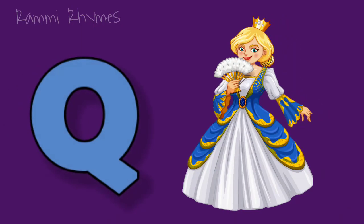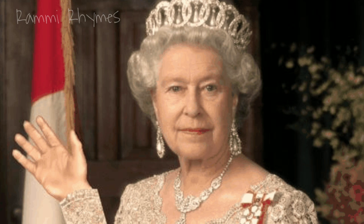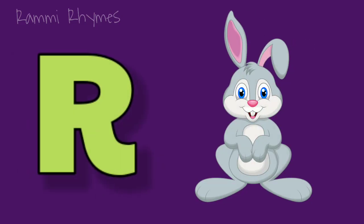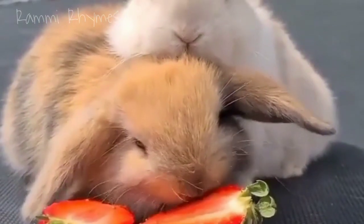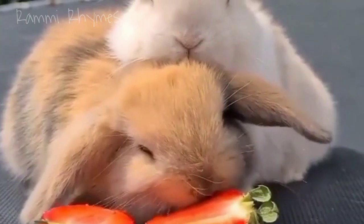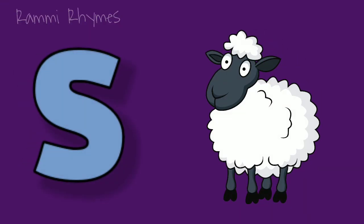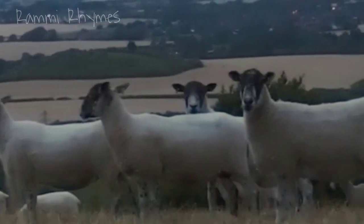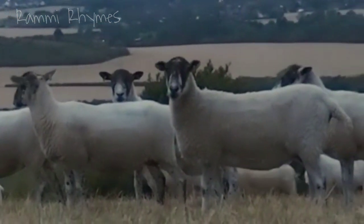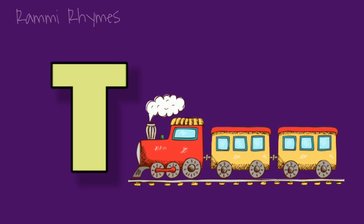Q is for queen. R is for rabbit. S is for sheep. T is for sheep.